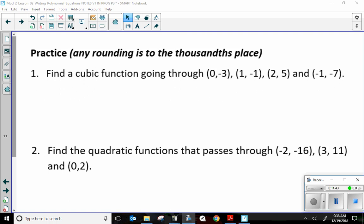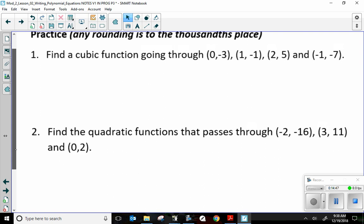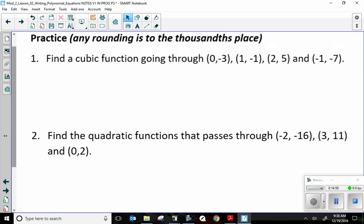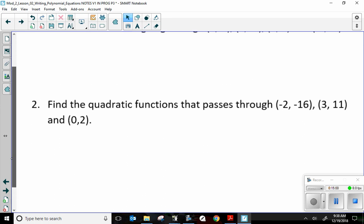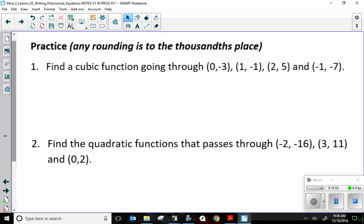So, find a cubic function going through the points. Then we've got to find a quadratic function going through the points. Any rounding is to the thousandths place. That's three decimal places. Three decimal places if we need to.